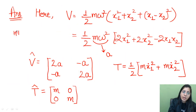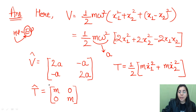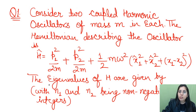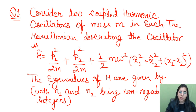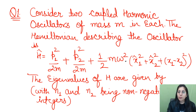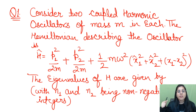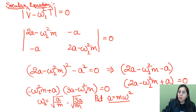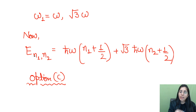We all know that H psi equals E psi, so the eigenvalue of the Hamiltonian is energy — that means they are asking you to find the energy. What are the steps you have to take? You will start solving the question with the secular equation, which is V minus omega squared T equals zero. From there, get the value of omega, and then proceed with the energy formula for the harmonic oscillator. The Hamiltonian equals T plus V — kinetic energy plus potential energy. Once you know the potential energy, I've noted it down from the expression given.